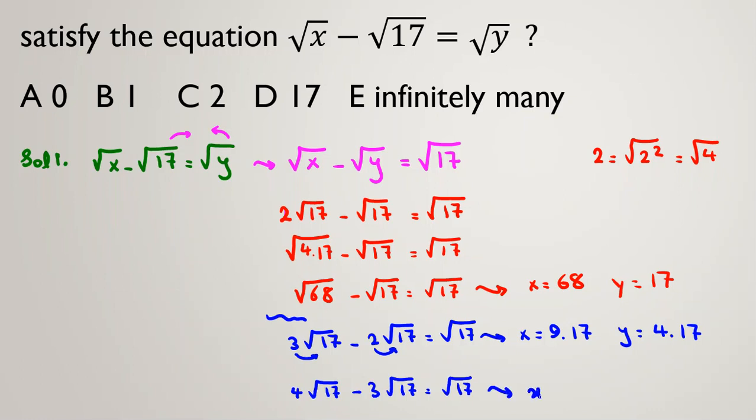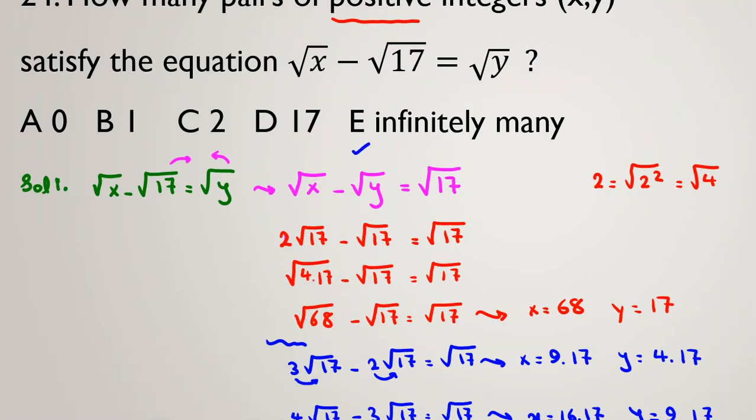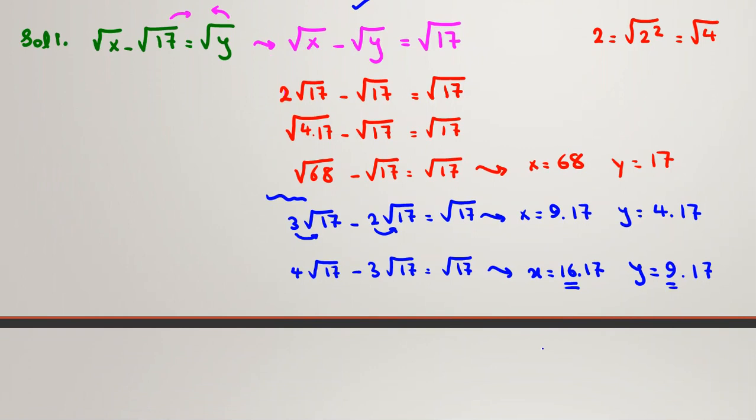You will see, you can also write 4√17 - 3√17 = √17. Again, you can say x = 16×17, y = 9×17. So we will see, we should only say 2 perfect squares times 17, consecutive perfect squares. So the answer is E. If you want to write the general form, you say x = (n+1)²×17, y = n²×17, and it is the answer.